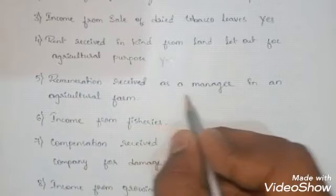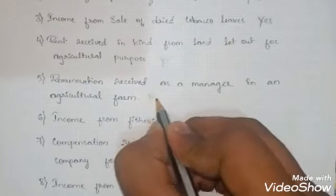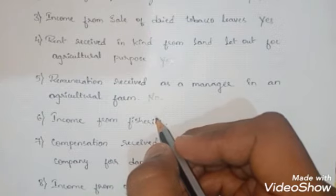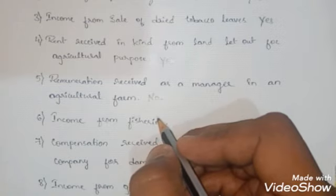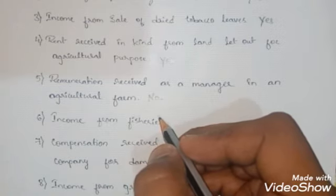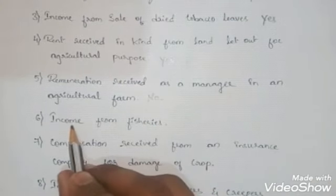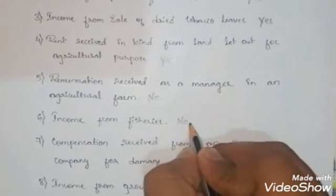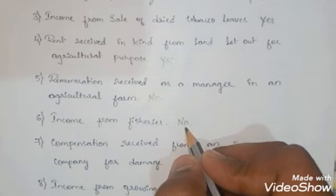Fifth: remuneration received as a manager in an agricultural farm — the answer is no. This is not agricultural income because the manager is not directly doing any agricultural activity. He is getting salary for management purposes, which involves decision-making and is a mental process, so this salary cannot be treated as agricultural income. Sixth: income from fisheries — the answer is no, because fisheries involves fishing activities, not agricultural activities.